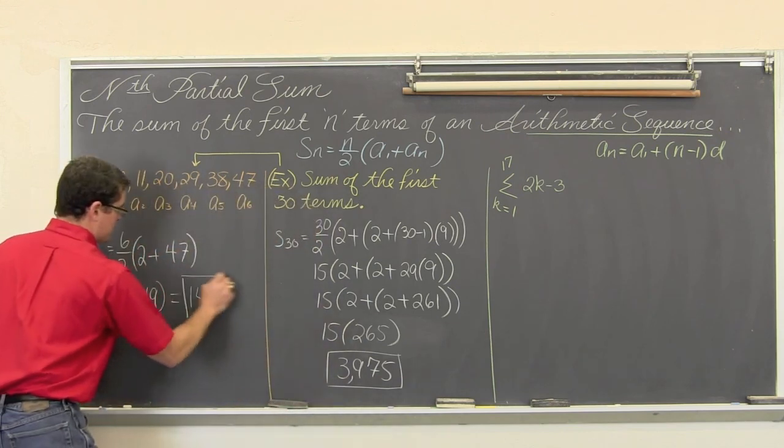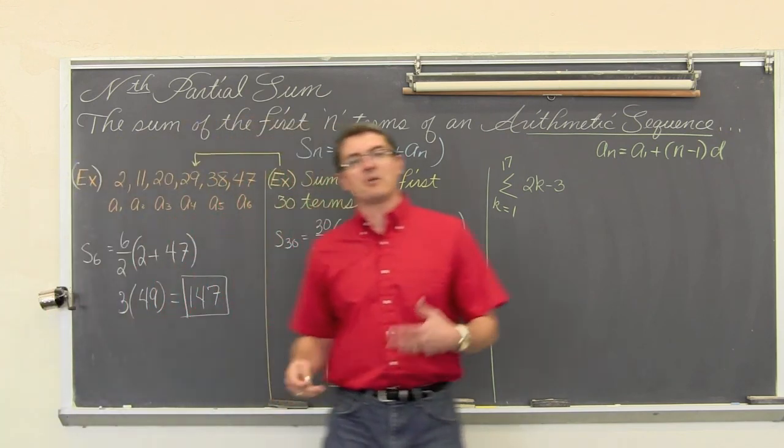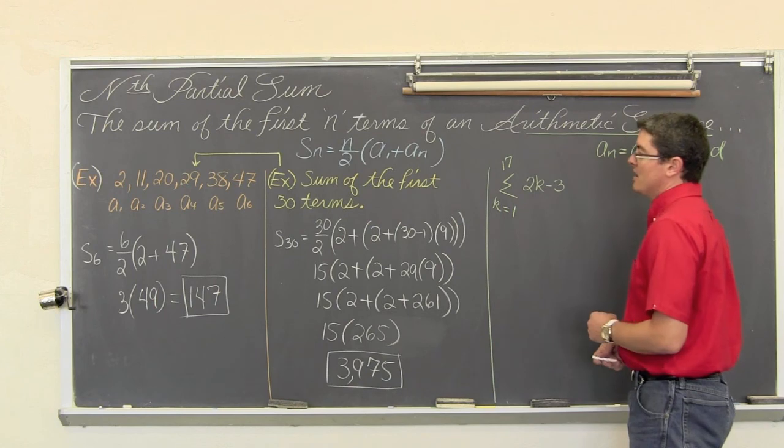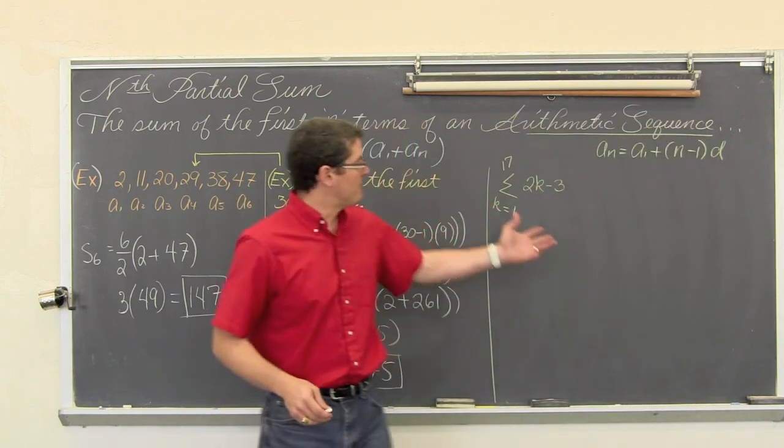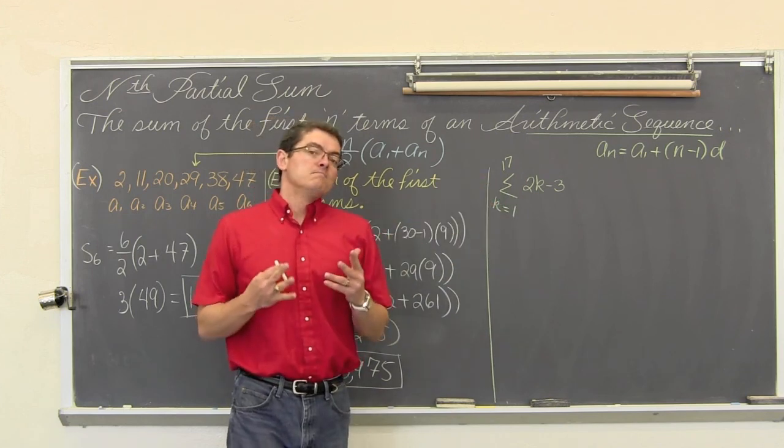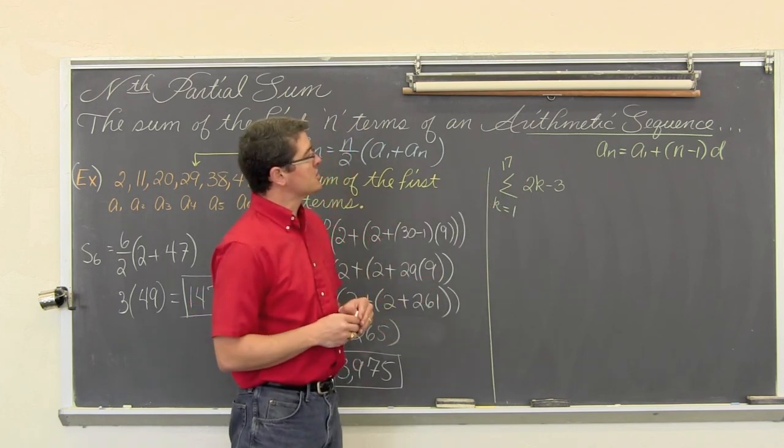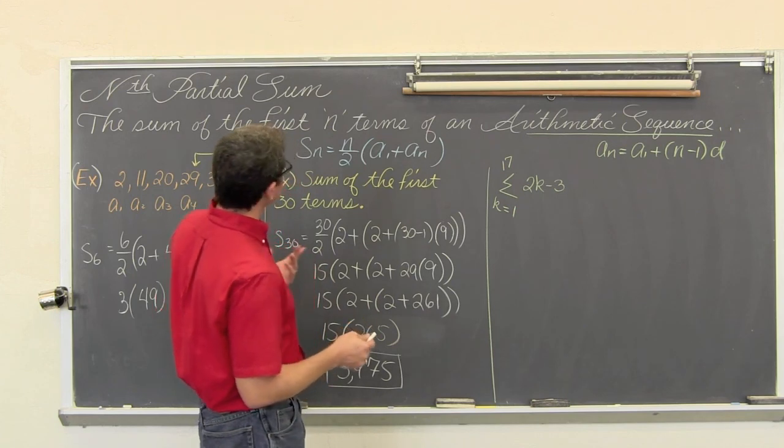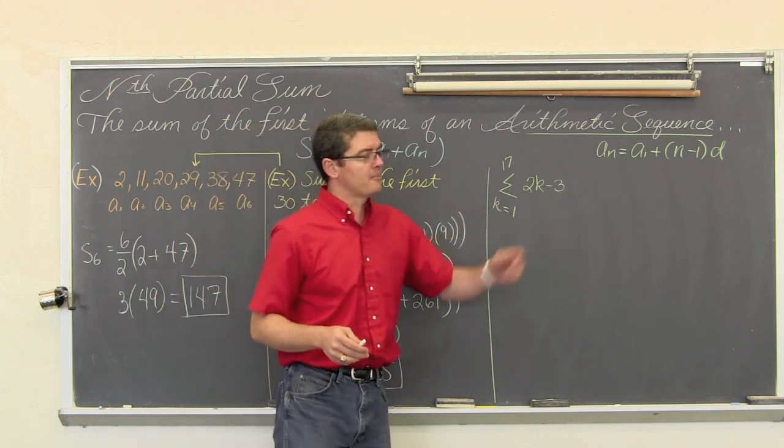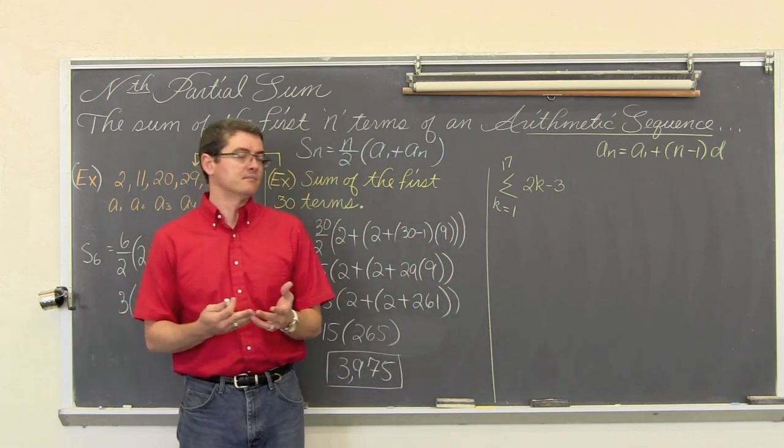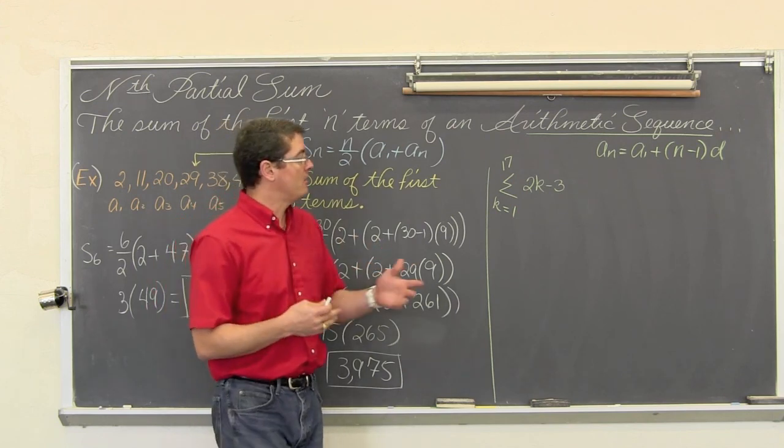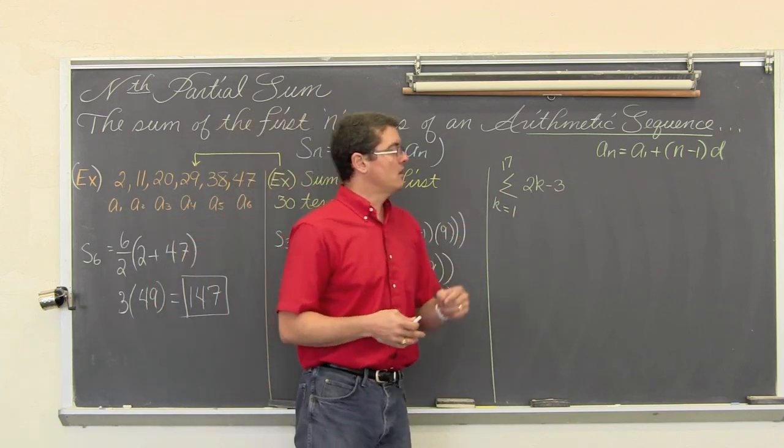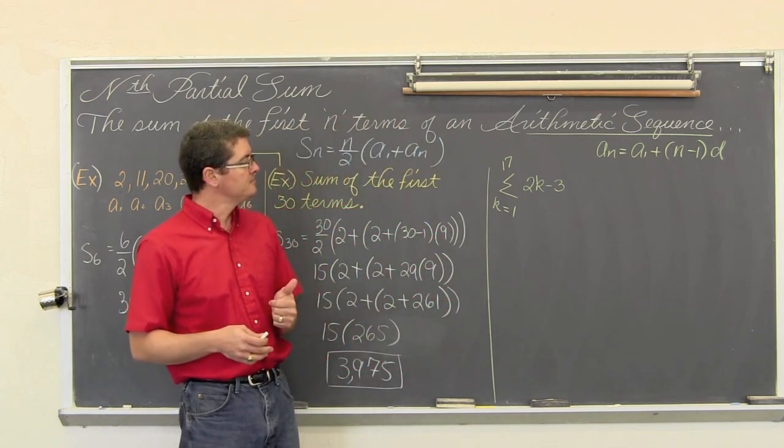And that is just a couple of examples, pretty straightforward examples of how to find partial sums of an arithmetic sequence. One a little bit harder than the other. Now our third example is going to be a partial sum, but my problem is written in summation notation. So what is that partial sum? Now you might not look at this and immediately go, well that is arithmetic.